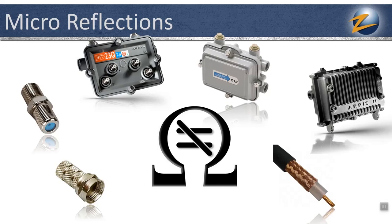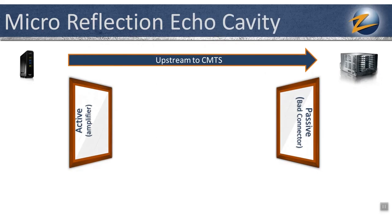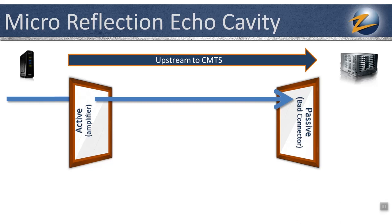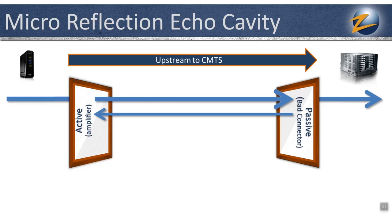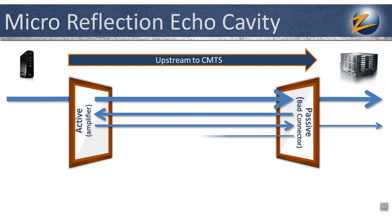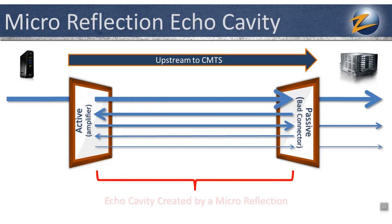When we have an impedance mismatch on the HFC plant, some or all of the signal wave will be reflected by the mismatch and directed back to the source. For example, as a signal travels upstream from a cable modem to the CMTS, it may encounter an impairment such as a corroded connector. Usually most of the upstream signal will pass through the impairment and continue toward the CMTS, but a fraction of the signal will be reflected back to the source as a microreflection, heading in the opposite direction. This reflected signal may encounter a second reflection point downstream, such as another impairment or an active device like an amplifier. That reflection is reflected back toward the CMTS, where it encounters the original reflection point, causing another microreflection back downstream, and so on. This creates an echo cavity over the length of the cable between the two reflection points.